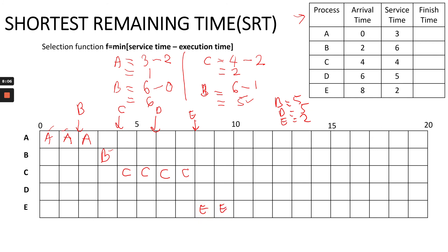After E finishes, we compare B and D, which have equal remaining times. We need to choose the process that arrived first. Since B arrives before D, B executes next, and finally we continue with process D.